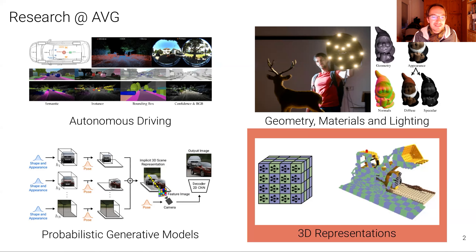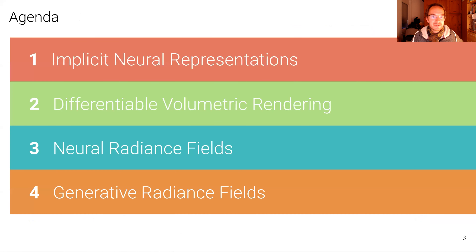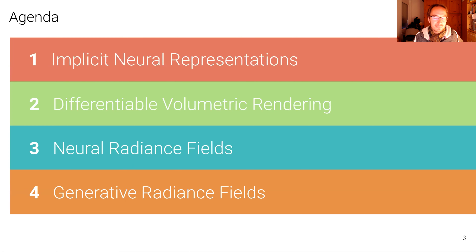So let's dive right into it. This is the agenda for today. I divided the talk into four units. The first is on introducing implicit neural representations. Then we're going to talk about how to learn these representations from images alone, how to build neural radiance fields, and in particular generative models for these neural radiance fields in the end.